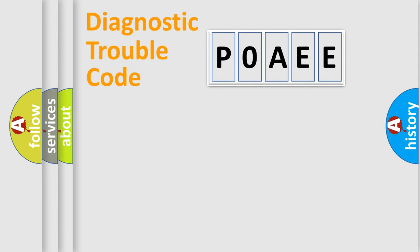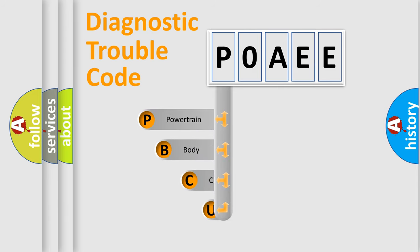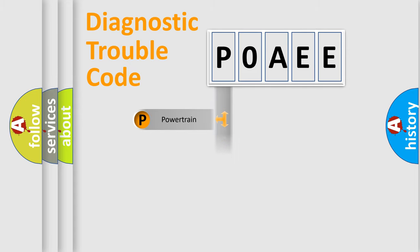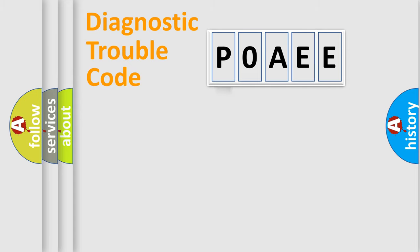First, let's look at the history of diagnostic fault code composition according to the OBD2 protocol, which is unified for all automakers since 2000. We divide the electric system of an automobile into four basic units: Powertrain, Body, Chassis, and Network. This distribution is defined in the first character of the code.